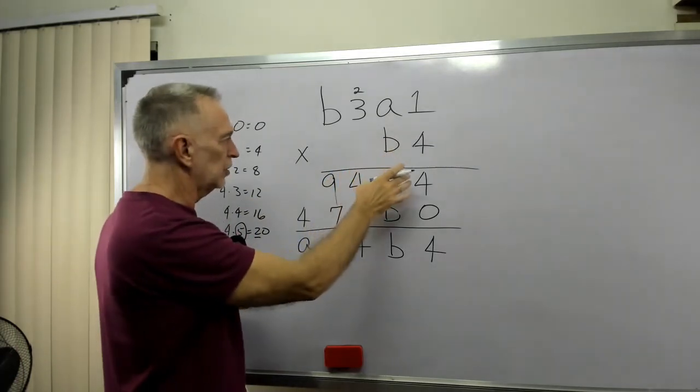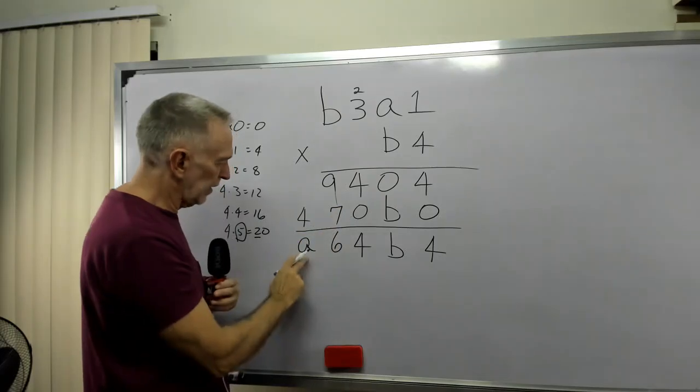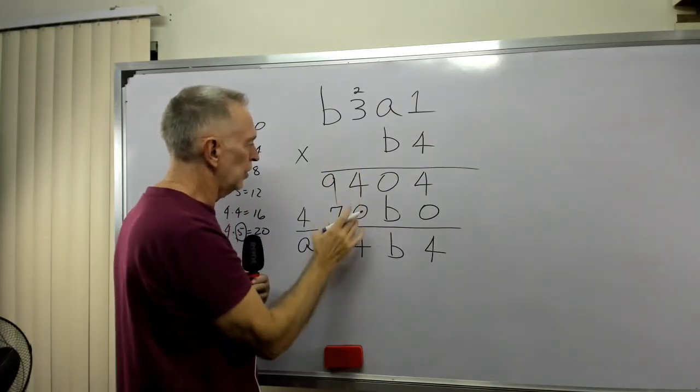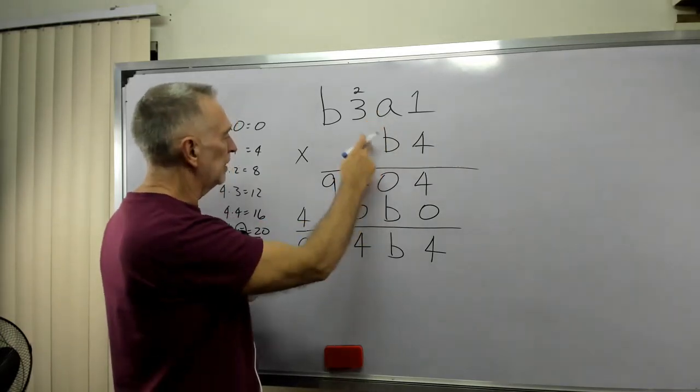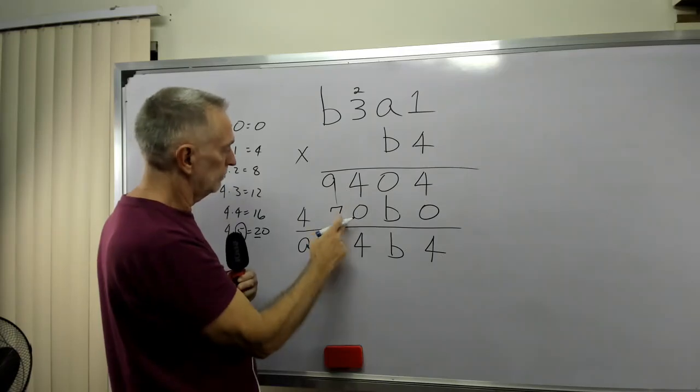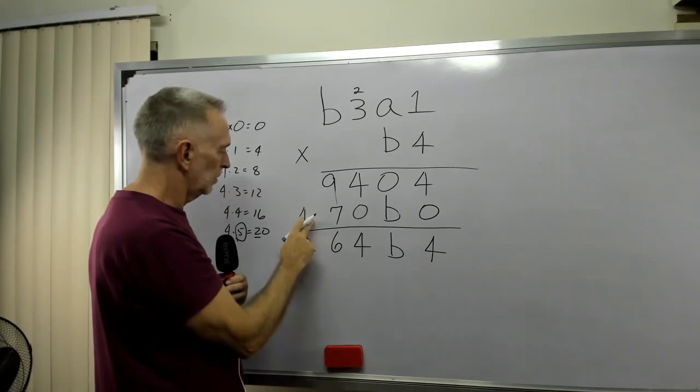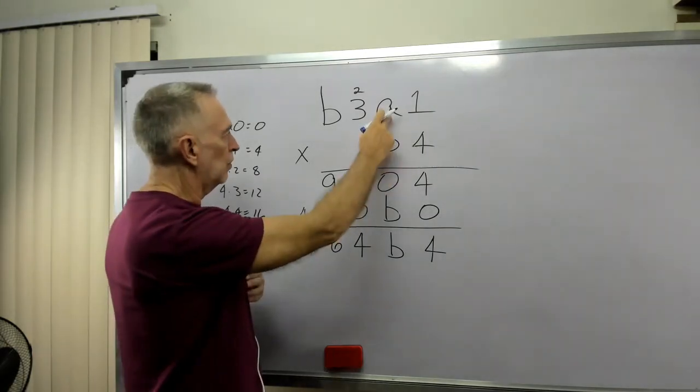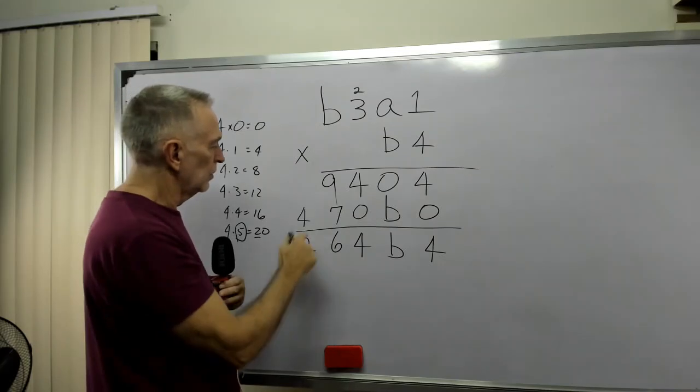Now we can continue on because down here I have an A also. So in this case where we've multiplied through all the numbers, for example, B times 1 is B, B times A is 0, B times 3 is 7, B times B is 4. Okay, but 4 is A? What do you think? 4 times 4 is 16. So A is not 4.